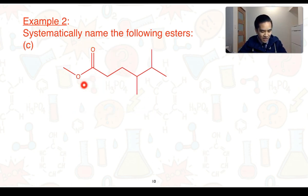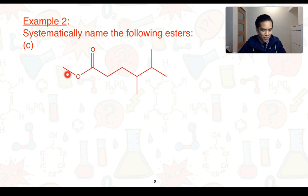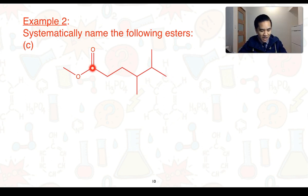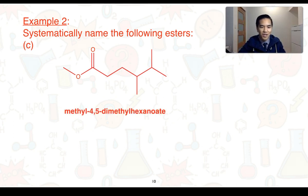For part C, the ester group is identified here. The alcohol component comes from the section with the single-bonded oxygen — it consists of only one carbon atom, making it a methyl group. The carboxylic acid component consists of 1, 2, 3, 4, 5, 6 carbon atoms in the longest chain. We have to account for methyl groups on carbons 4 and 5, so the carboxylic acid would have been 4,5-dimethylhexanoic acid. Therefore, the name of this ester is methyl-4,5-dimethylhexanoate.